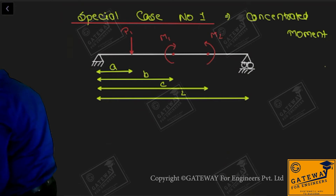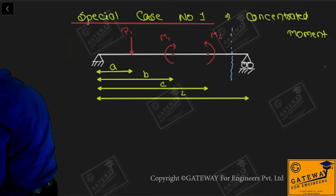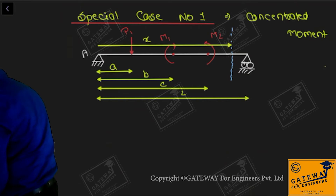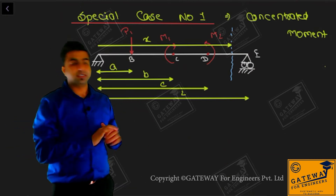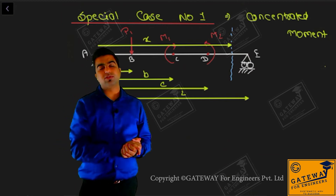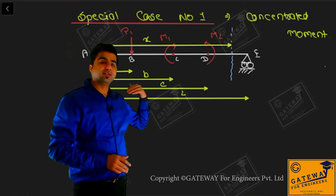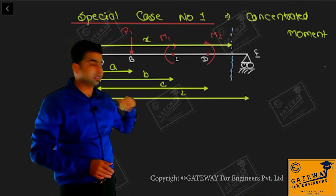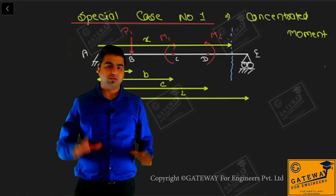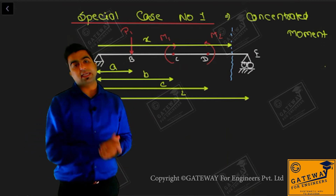We will take a section at the most generalized position. This section is at a distance of small x. So this is point A, B, C, D, and E. In the D portion, you can also take the first portion, but in that case you would have to take x from right to left. We have taken left to right, and we took the last section, so there is no issue.